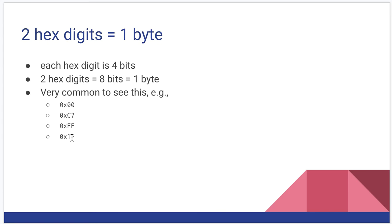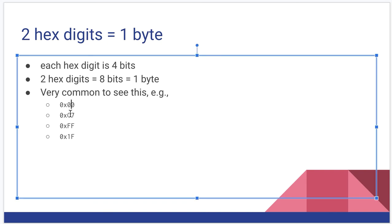Hopefully, you get this already, but understand that two hex digits, where each hex digit is four bits, two of those together equals one byte. So, it's very common to see situations like 0x00C7FF1F. Each grouping of two hex digits is equivalent to a single byte of information.